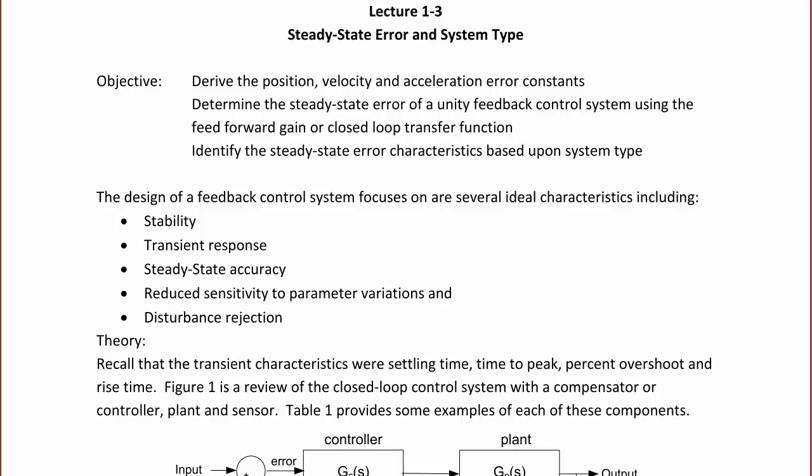Recall that the transient characteristics were settling time, time to peak, percent overshoot, and rise time. Figure 1 below is a review of the closed-loop control system with a compensator or controller, plant, and sensor.